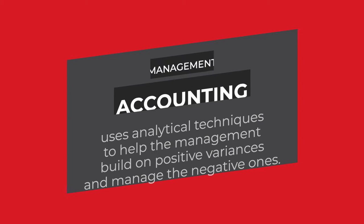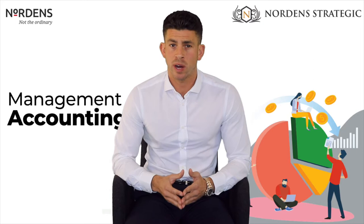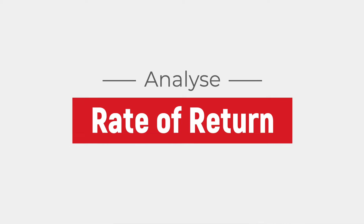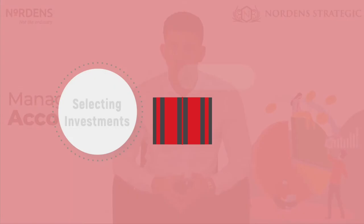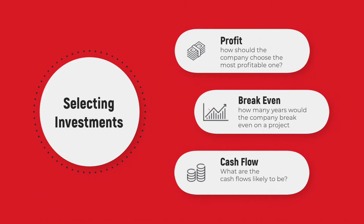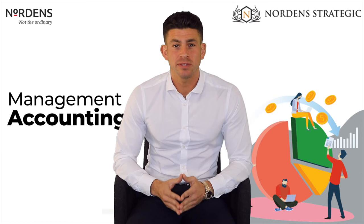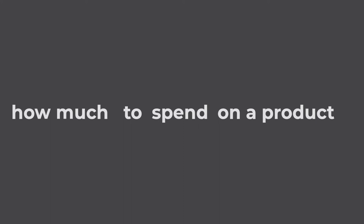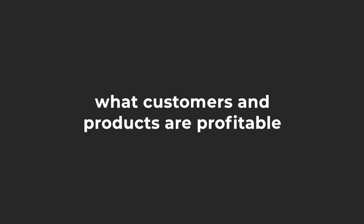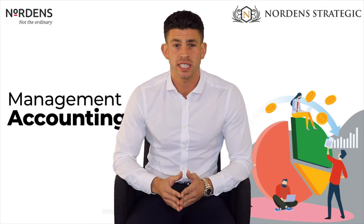Analyzing the rate of return. Before embarking on a project that requires heavy investments, the company would need to analyse the expected rate of return. If given two or more investment opportunities, how should the company choose the most profitable one? In how many years would the company break even on a project? What are the cash flows likely to be? These are all vital questions that could be answered through Management Accounting. Management Accounting uses activity-based costing to decide what to produce, how much to spend on a product, how much it will cost to service a customer, and what customers and products are profitable. They find the answers to these integral questions so that business owners can focus on maximising revenue.